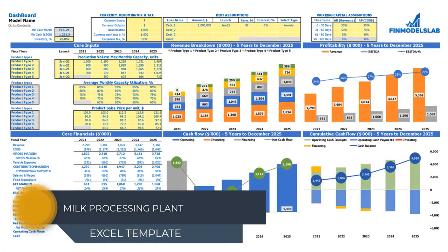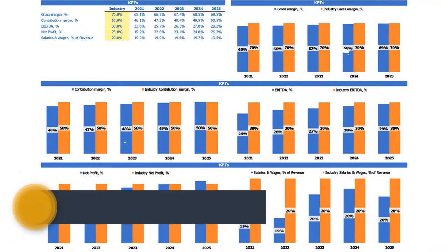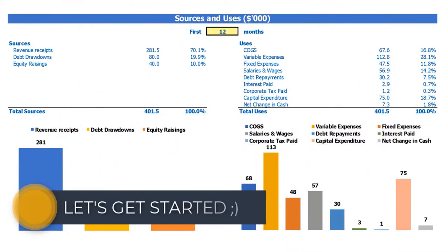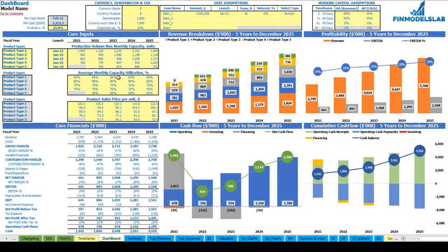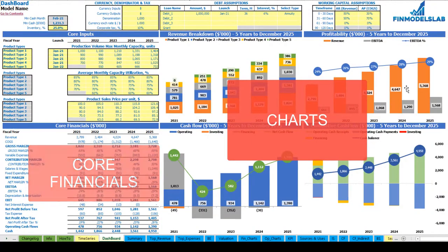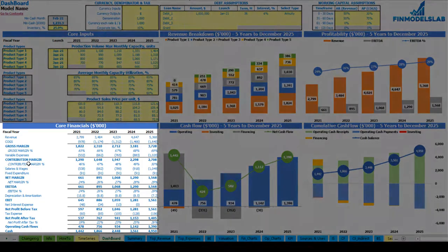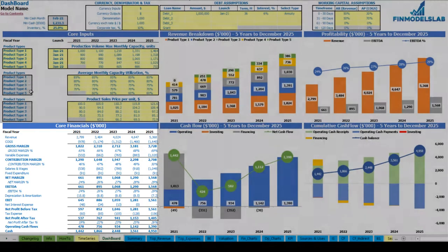Hello, in this video I'm going to walk you through the financial model Excel template. I will show you the main inputs, the core outputs, reports, and charts. On the dashboard you can set up your core inputs or drivers for the model, review the core charts such as revenue breakdown, profitability, cash flow, and cumulative cash flow, and also review the core financials which is a summary of your financials by years.